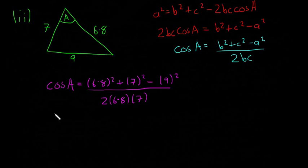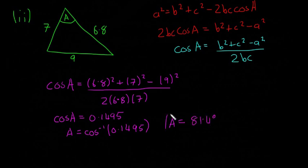You're going to stick that into your calculator, and you're going to find that cos A equals 0.1495, and then A is going to be inverse cosine of 0.1495. Again, it's a button on your calculator, and we're going to find that our answer A is going to be 81.4 degrees.